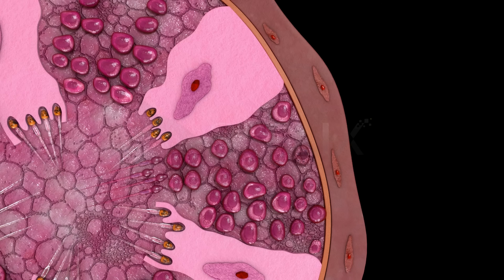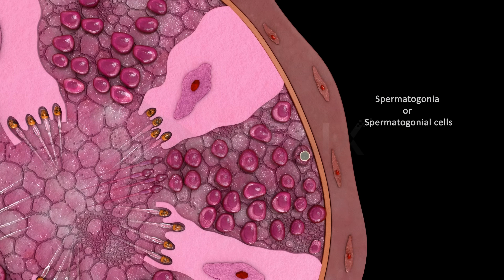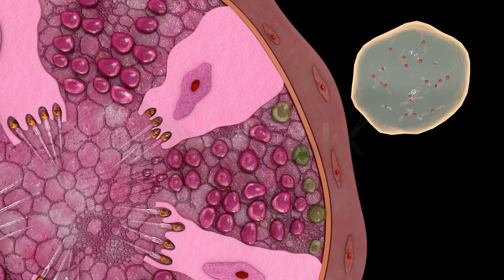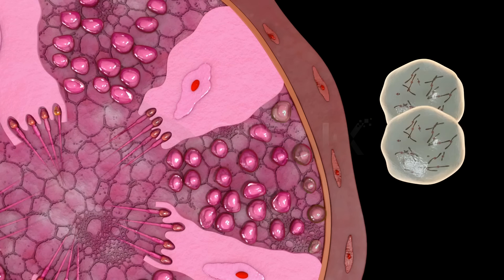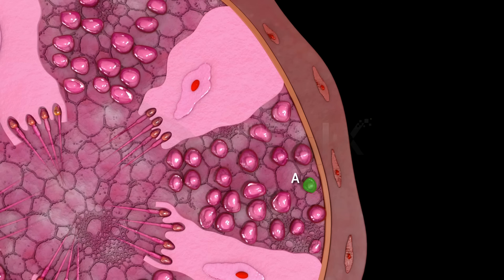Spermatocytogenesis: The primordial germ cells are cuboidal epithelial cells that form the germinal epithelium, which lines the seminiferous tubule. These primordial germ cells are called the spermatogonia, or spermatogonial cells. The spermatogonia are diploid cells containing 46 chromosomes. They divide repeatedly by mitotic divisions, producing two types of cells called type A and type B spermatogonia, and serve as stem cells.